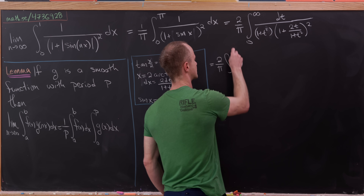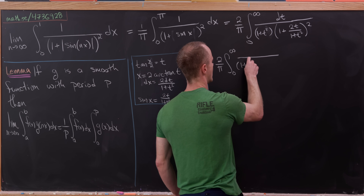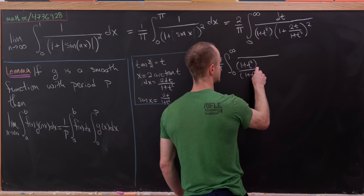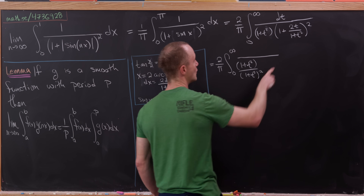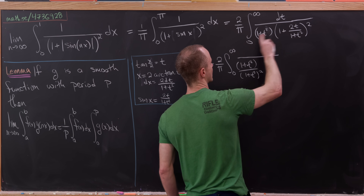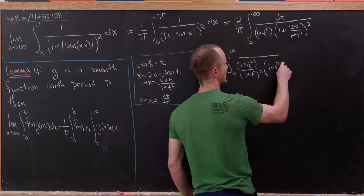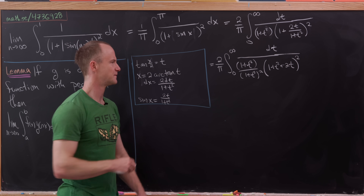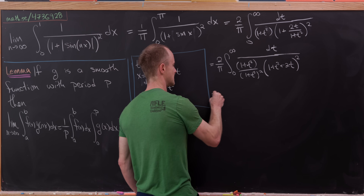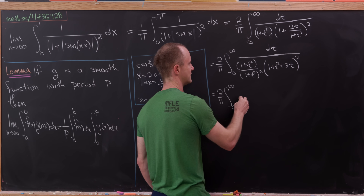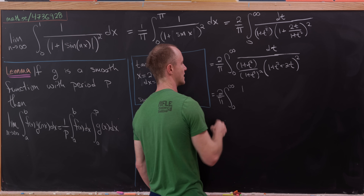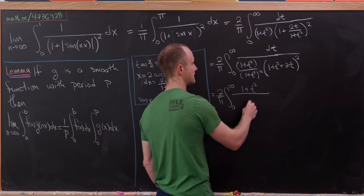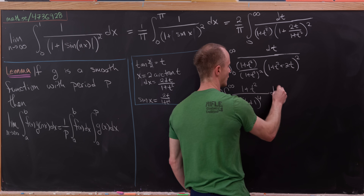So we have 2 over pi times the integral from 0 to infinity of (1 plus t squared) over (1 plus t squared) squared, factoring 1 plus t squared out of the denominator, which leaves (1 plus t squared plus 2t) squared. Simplifying, the (1 plus t squared) in the numerator flips up, and we observe that 1 plus t squared plus 2t is simply (t plus 1) to the 4th power, giving us the integral of (1 plus t squared) over (t plus 1) to the 4th, times dt.